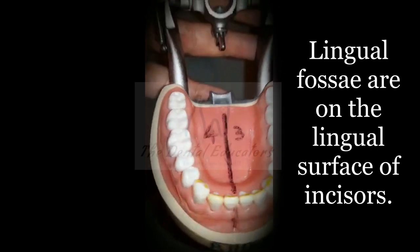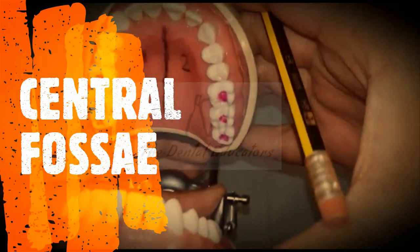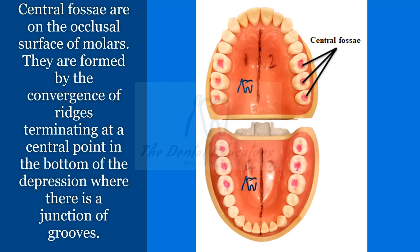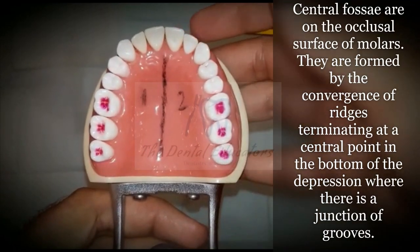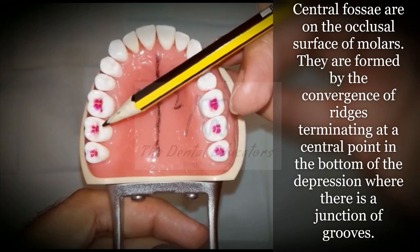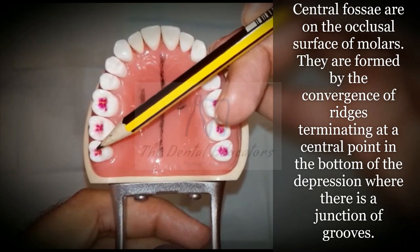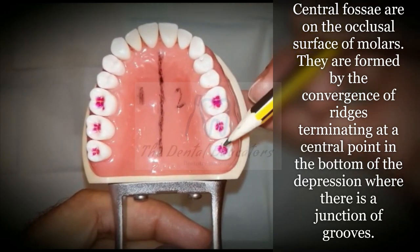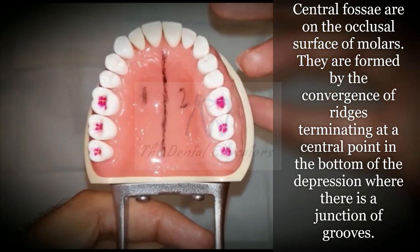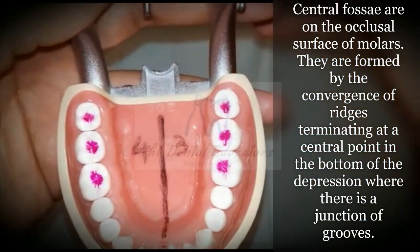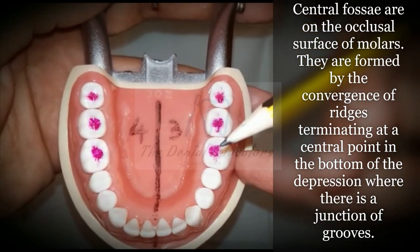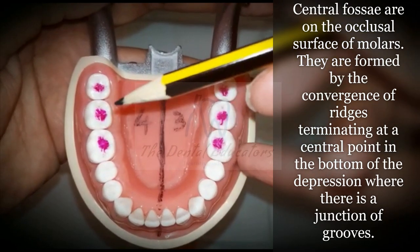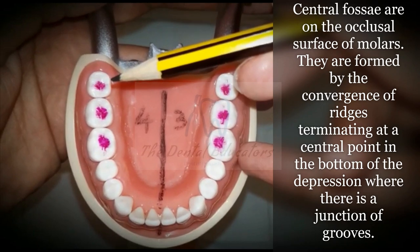The central fossa is found on the occlusal surfaces of molars only. It is formed by the convergence of ridges terminating at a center point at the bottom of a depression where grooves meet. The pink marked areas in the first, second, and third molars of both the maxillary and mandibular arch represent the central fossa, present in all four quadrants.